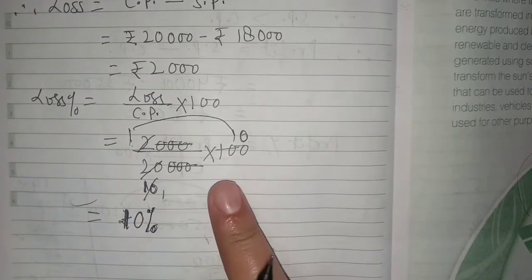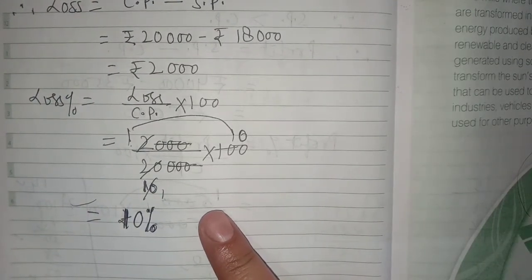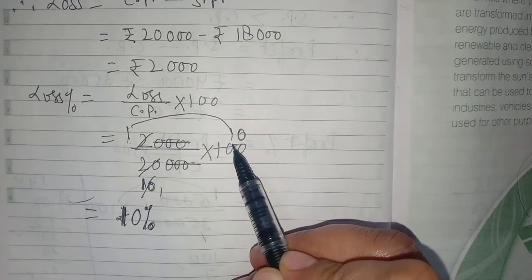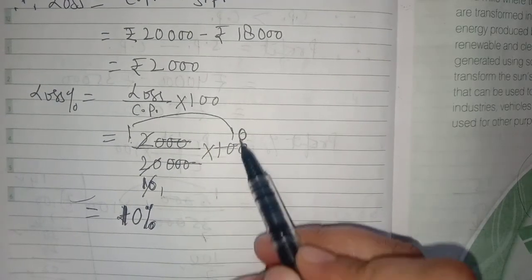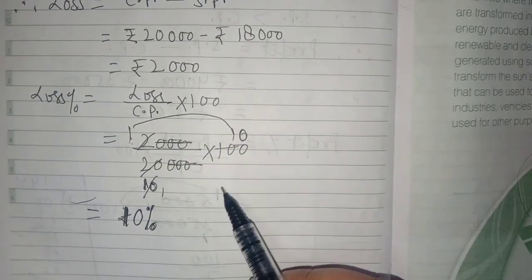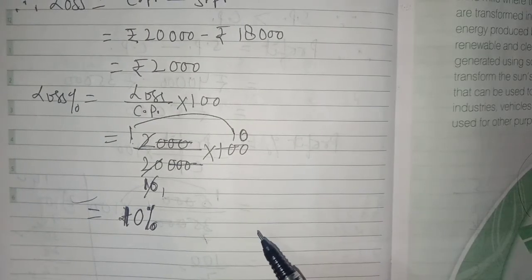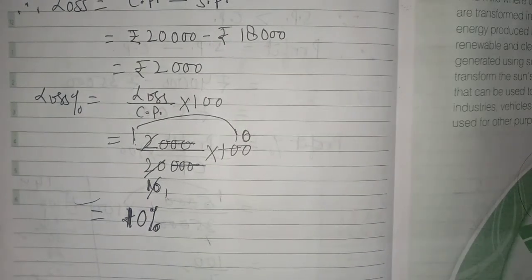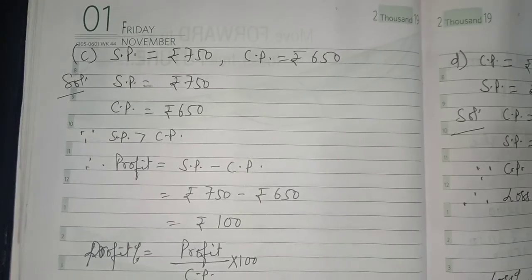The calculation method is up to you — you can multiply first and then divide by 20,000, or simplify in any other manner you prefer. The approach is flexible.